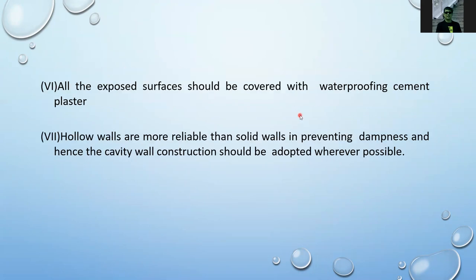All exposed surfaces should be covered with waterproofing cement plaster. Hollow walls are more desirable than solid walls in preventing dampness — cavity wall construction should be adopted wherever possible. A cavity wall has two walls with a space in between, so if water penetrates the first wall, it will not transfer to the second wall because of the gap. All walls exposed to weather need waterproofing cement, though not necessarily a waterproofing membrane.